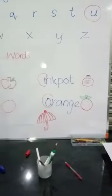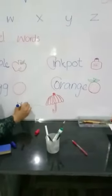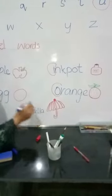O is also a vowel letter. And now the last one is u-m-b-r-e-l-l-a, umbrella.